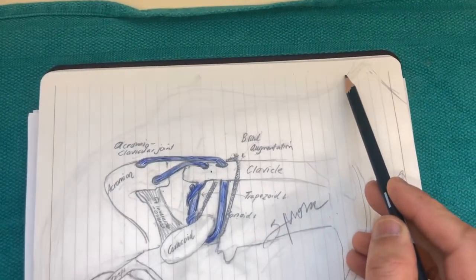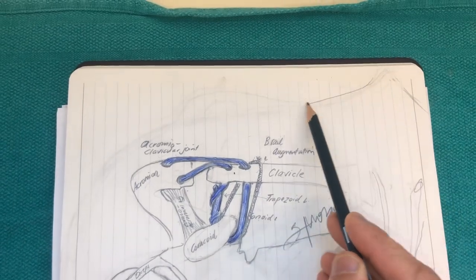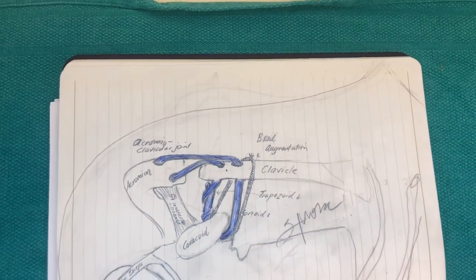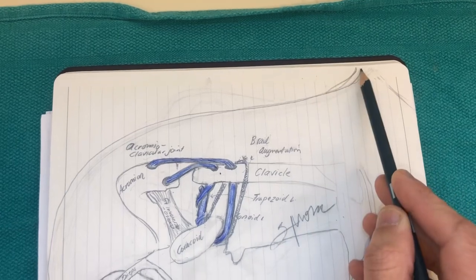To give you perspective, this would be the patient's top of the shoulder, deltoid and arm, and your neck would be over there.